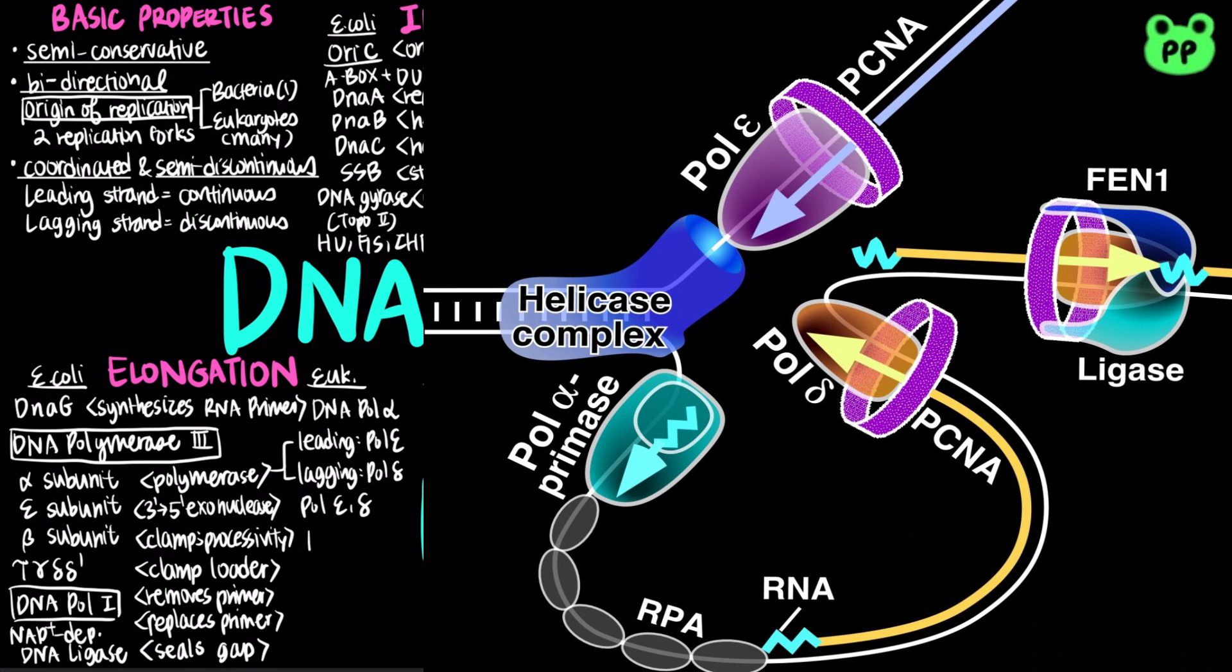Both are associated with PCNA, which stands for proliferating cell nuclear antigen, which is analogous to the beta-clamp subunit of DNA polymerase 3, keeping the polymerase attached to DNA. RFC, or replication factor C, serves as the clamp loader in eukaryotic replication.